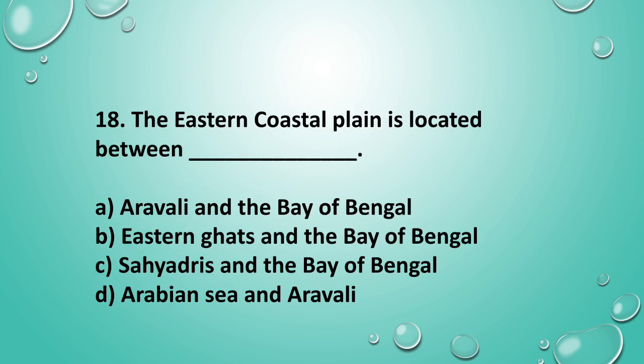Question 18: The eastern coastal plain is located between ___. The eastern coastal plain is located between the Eastern Ghats and the Bay of Bengal — that is option B.